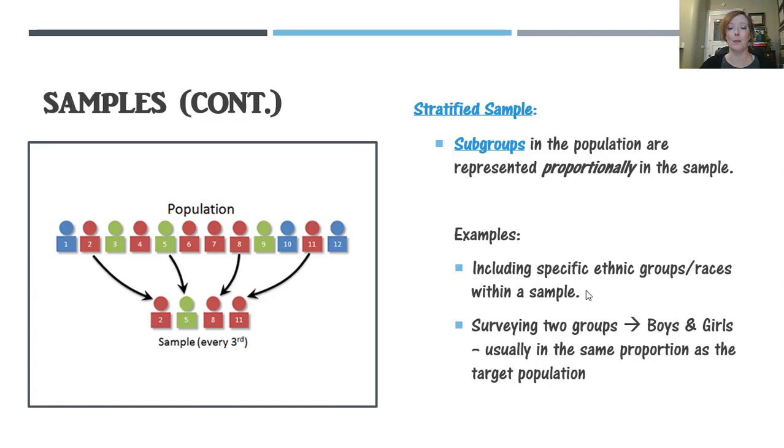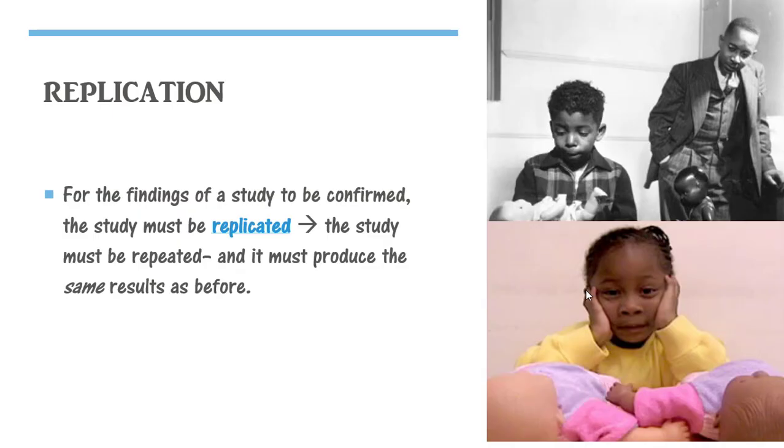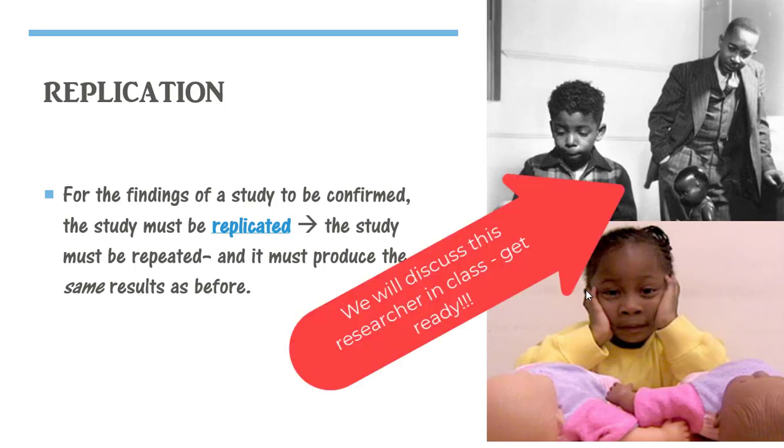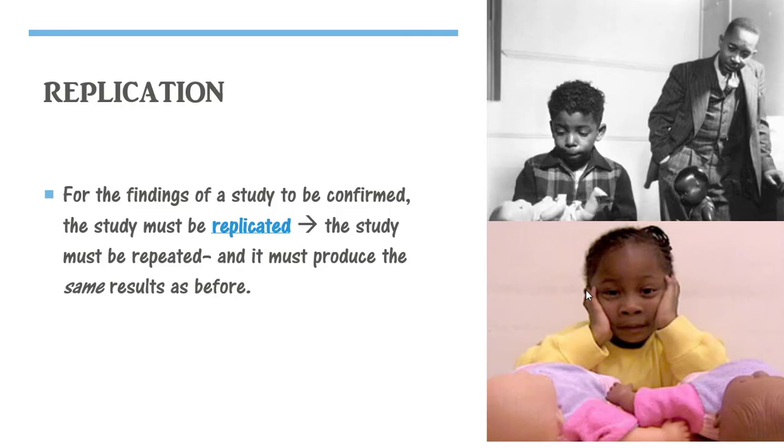In psychology, when we want to confirm the findings of a study, we do this thing called replicate. We repeat the study, we use the same exact steps, and it has to produce the same results as before. If it doesn't produce the same results, then there might have been a problem with the way it was set up to begin with. So replication is a very important part of conducting a research study.